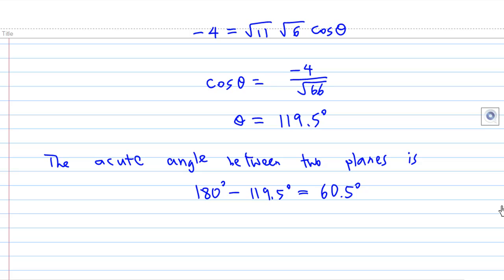Now, this angle is more than 90 degrees, so we take the smaller angle, the acute angle. The acute angle between the two planes is 180 minus 119.5 degrees, which is 60.5 degrees.